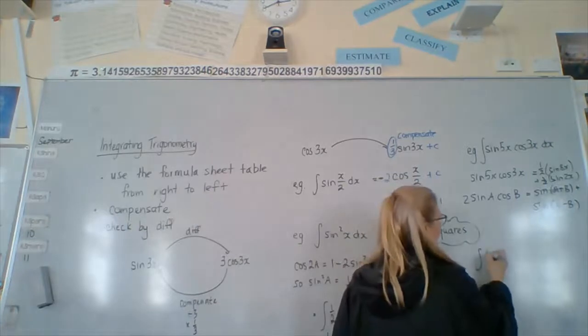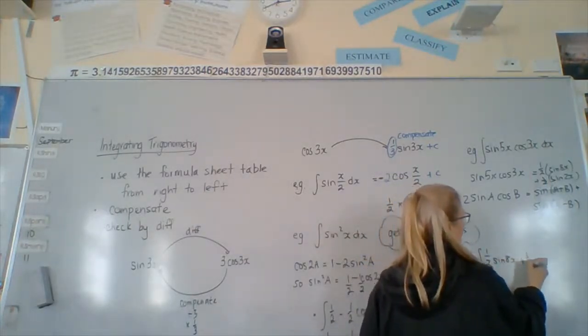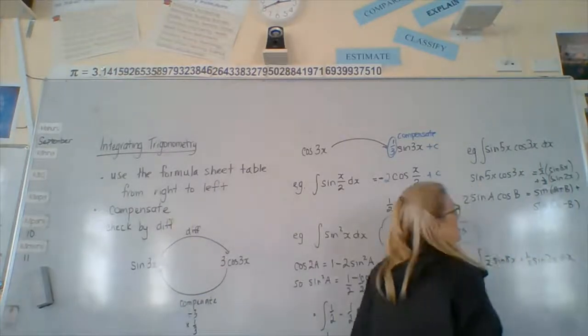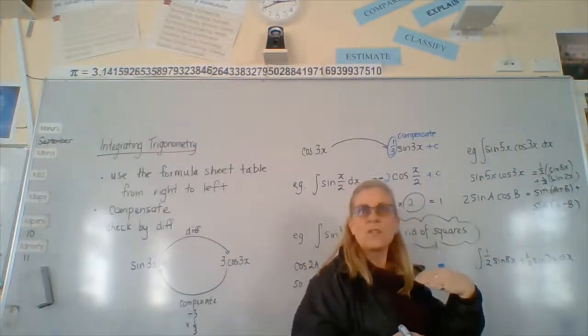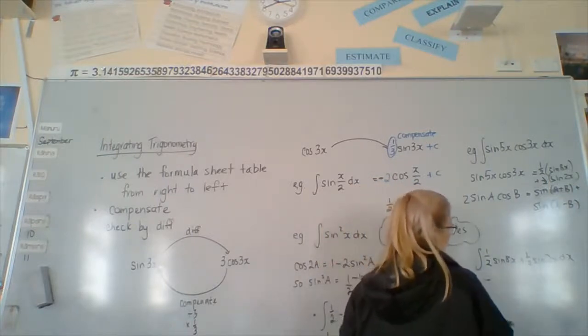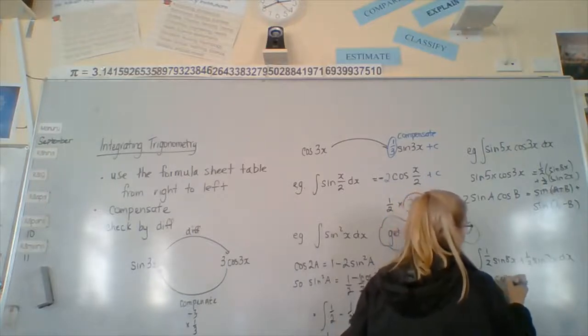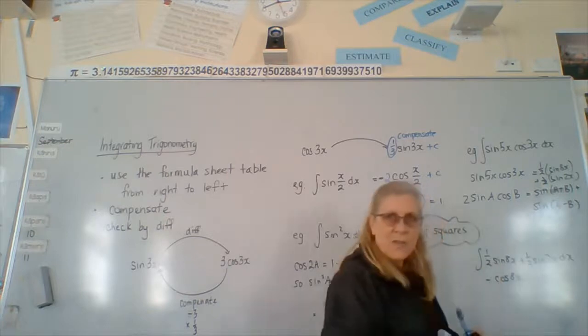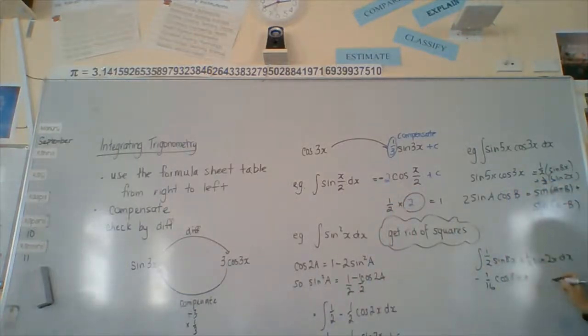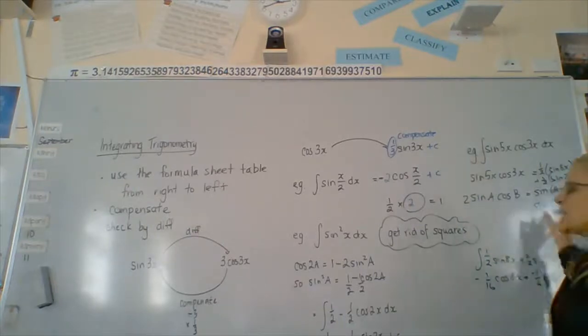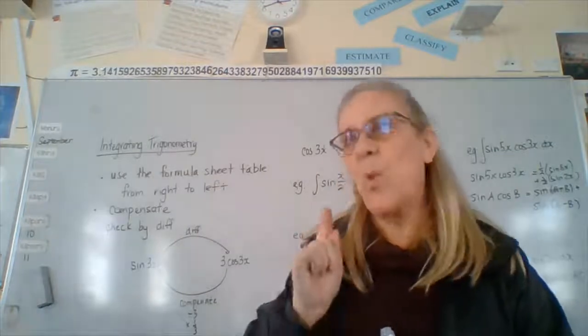We're integrating a half sine 8x, plus a half sine 2x dx. So, that was a question, but this is actually what we're going to do. So, we look up in our table, sine back to cos goes negative. So, we get negative cos 8x, compensate with the 8, means an 8th, a half and an 8th makes a what? 16th, well done. Same thing here. So, tell me what we're getting here. A quarter. Negative a quarter. So, you can change that to a minus, but it's just as good to write it like cos 2x plus c. So, those are the really difficult ones, which they possibly could put one of in your question.